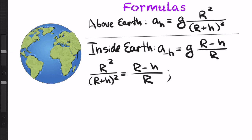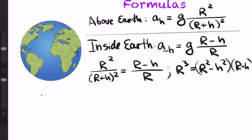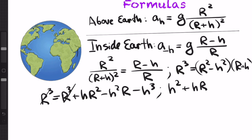So a natural thing to do would be to cross multiply and get this expression. So then you get r cubed is r cubed plus h r squared minus h squared r minus h cubed. These guys of course cancel out. And then we can divide through by h because h is not zero and get a quadratic, which is h squared plus h r minus r squared equal to zero.